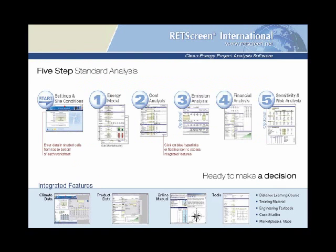RETScreen is well-known for its five-step standard analysis: energy model, cost analysis, emissions analysis, financial analysis, and sensitivity and risk analysis. Fully integrated are databases and manuals including the climate database, product database, and engineering tools. A new benchmark database allows users to compare energy performance of various reference facilities worldwide. Additional resources include distance learning courses, extensive training materials, an engineering cases textbook, case studies and templates, and maps.